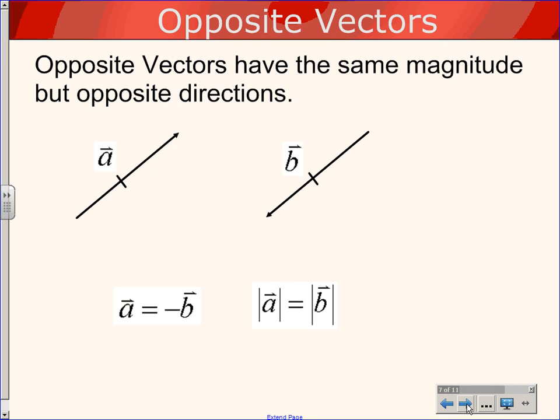We can have opposite vectors. This is a very similar idea, except now we're just changing the direction. The magnitude must be the same, but this time the direction of the two vectors is completely opposite. For example, one vector would be north, one vector would be south, completely opposite directions. The way we write that is vector A equals negative vector B. The negative sign is indicating the opposite direction.